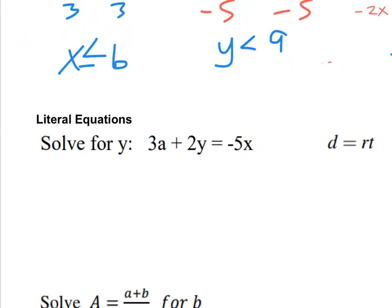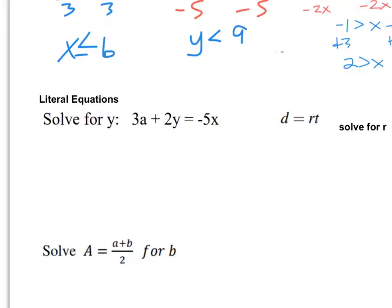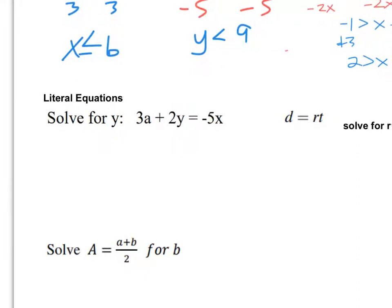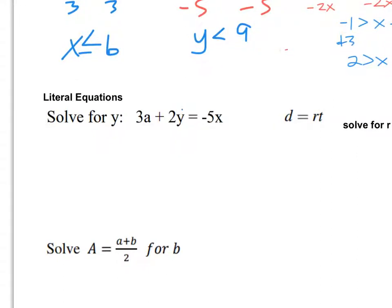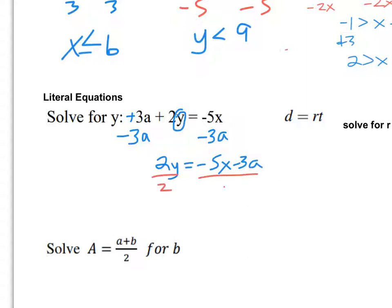Now we add in problems where I have multiple variables, but it's really the same thing as solving for an equation — I just won't be able to simplify things and combine terms. This one says to solve for y. My first step is to find where y is: I'm multiplying by 2 and adding 3a, so I subtract 3a first. I get 2y equals negative 5x minus 3a. Then I divide everything by 2, so y equals (negative 5x minus 3a) over 2. You could split that into multiple fractions if you want.